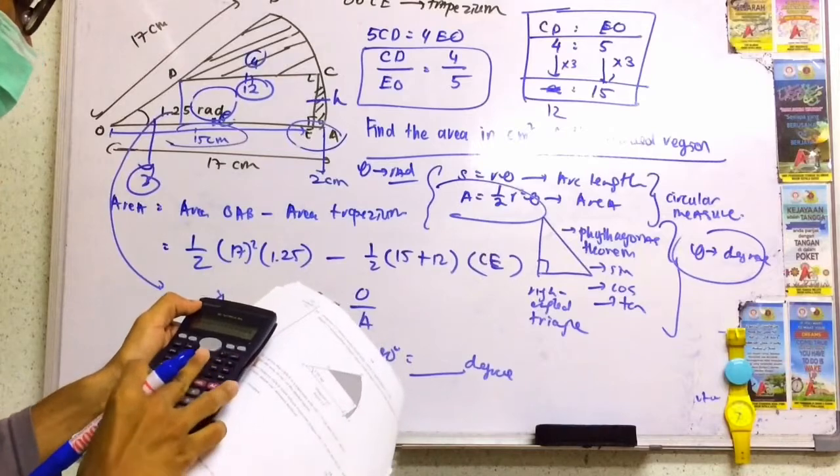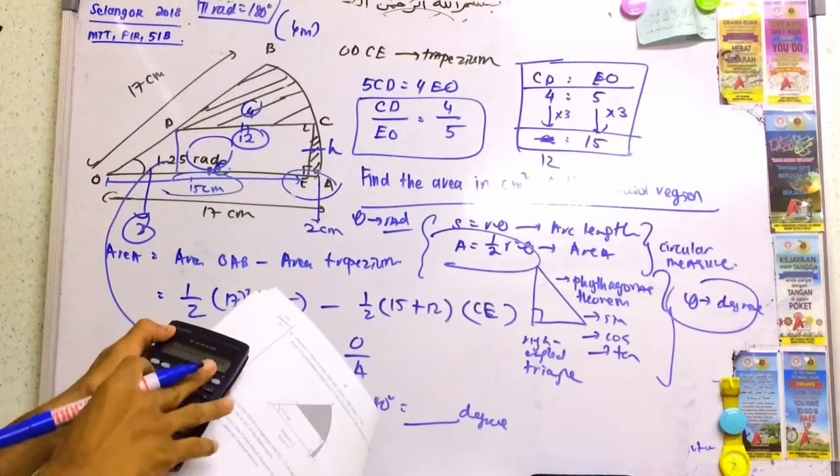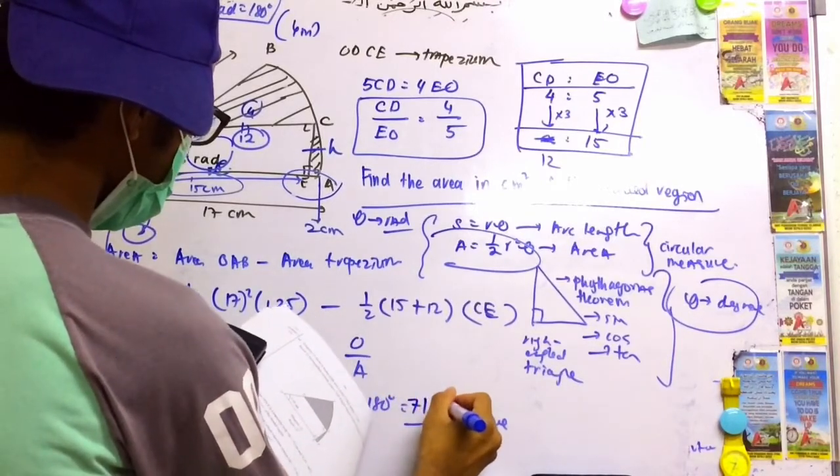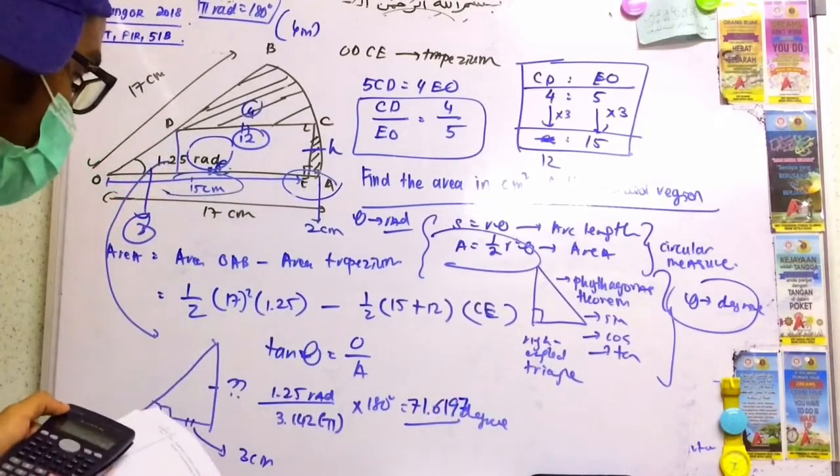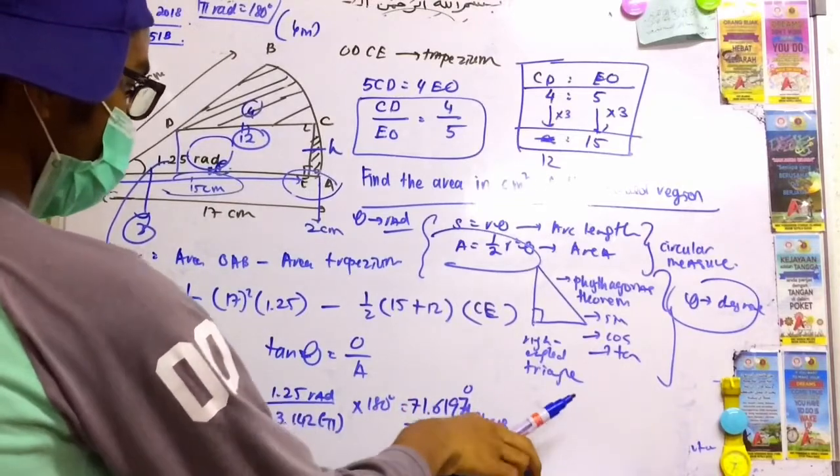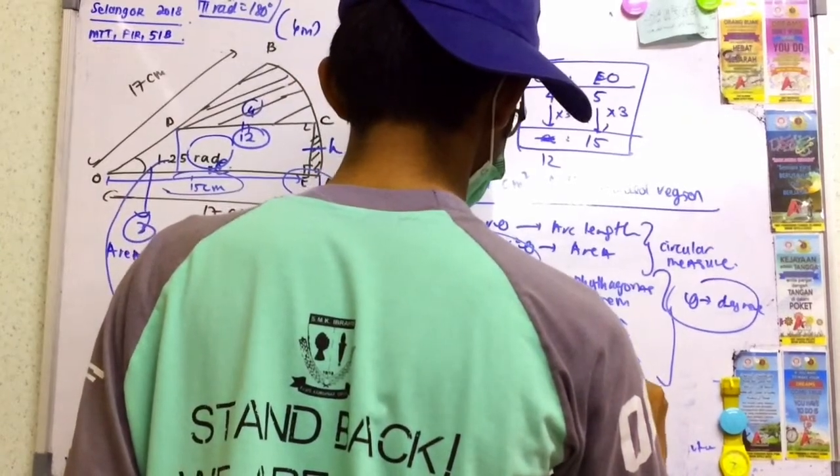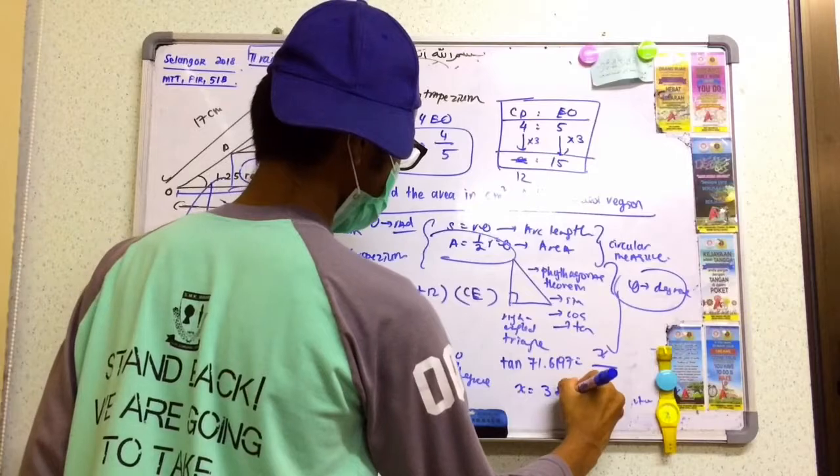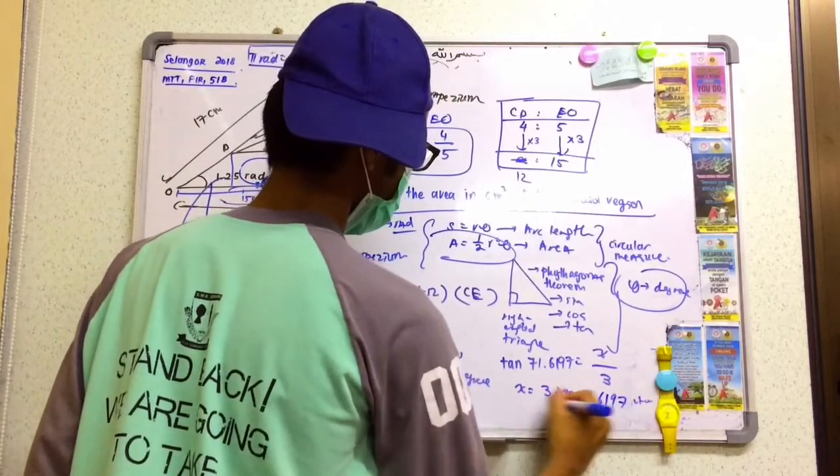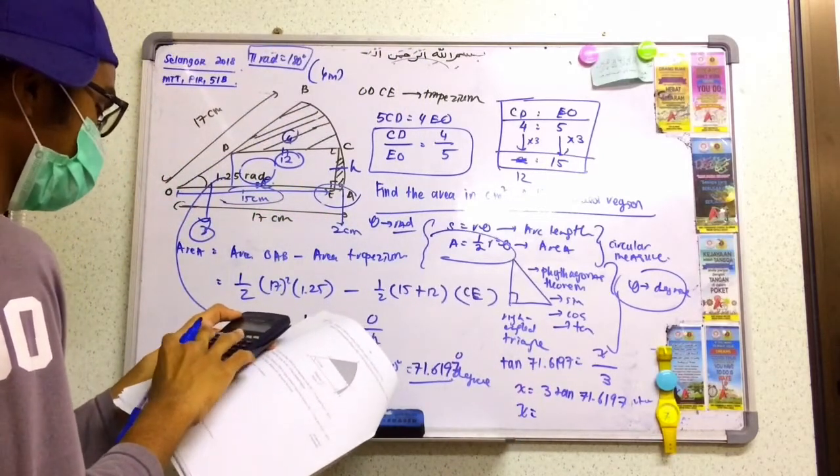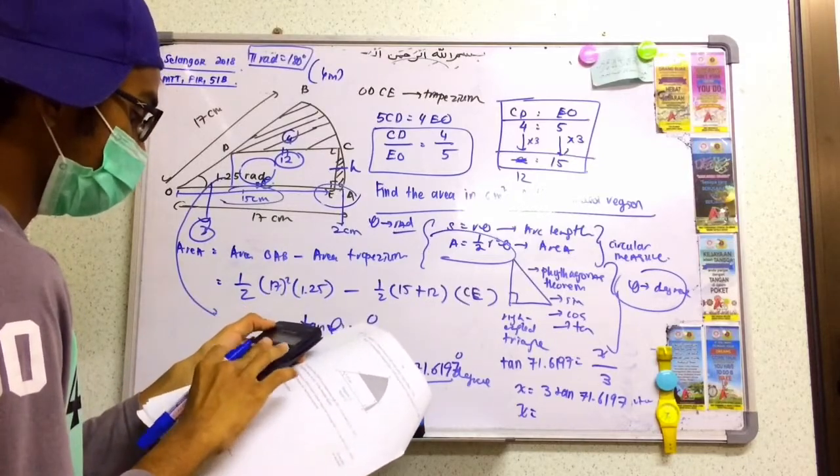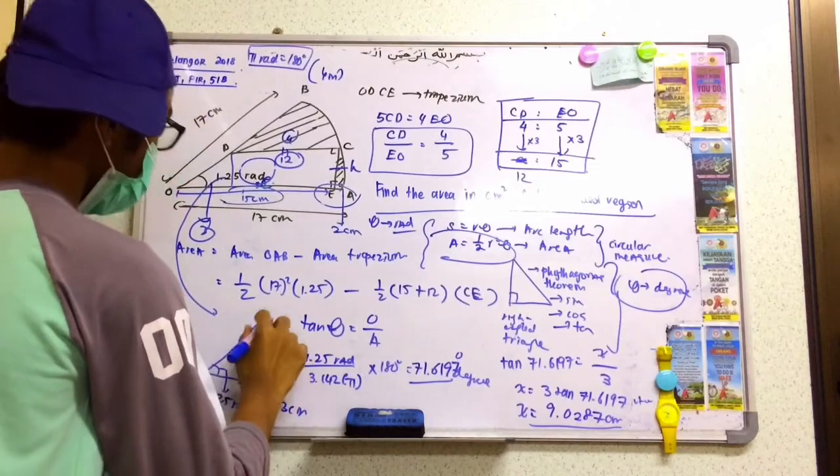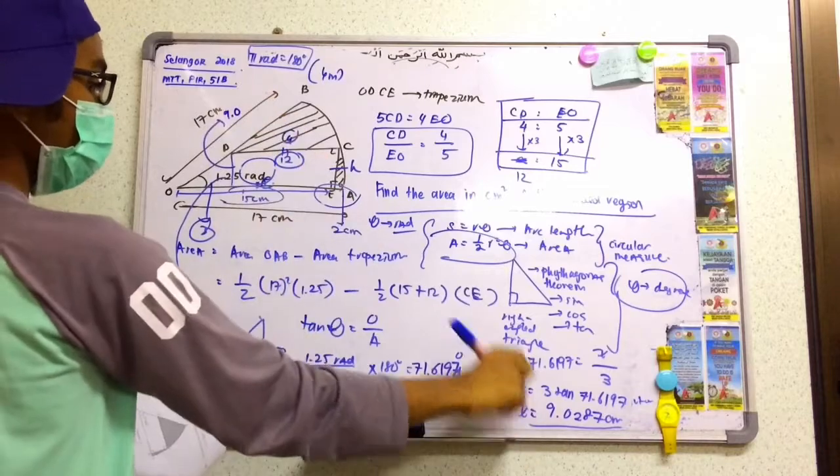Now we apply tangent. Tangent of 71.6197 degrees equals opposite over adjacent, which is x over 3. So x equals 3 times tangent of 71.6197 degrees, which equals 9.0287 cm. This is the height, which is CE.